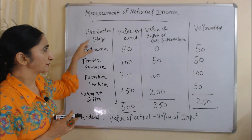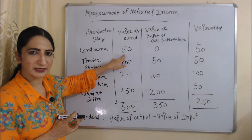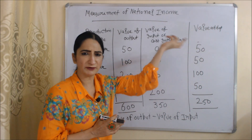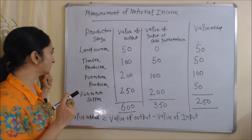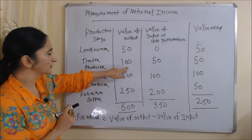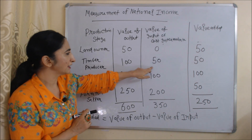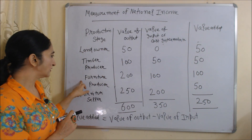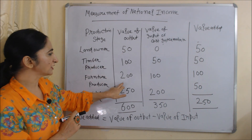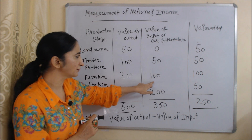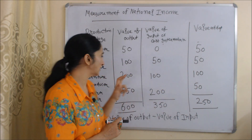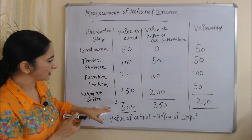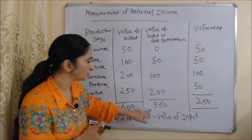Value added by the landowner: value of output is 50, value of input is assumed to be 0, so value added = 50. Value added by the timber producer: value of output is 100, value of input is 50, so value added = 50. Value added by the furniture producer: value of output is 200, value of input is 100, so value added = 100.